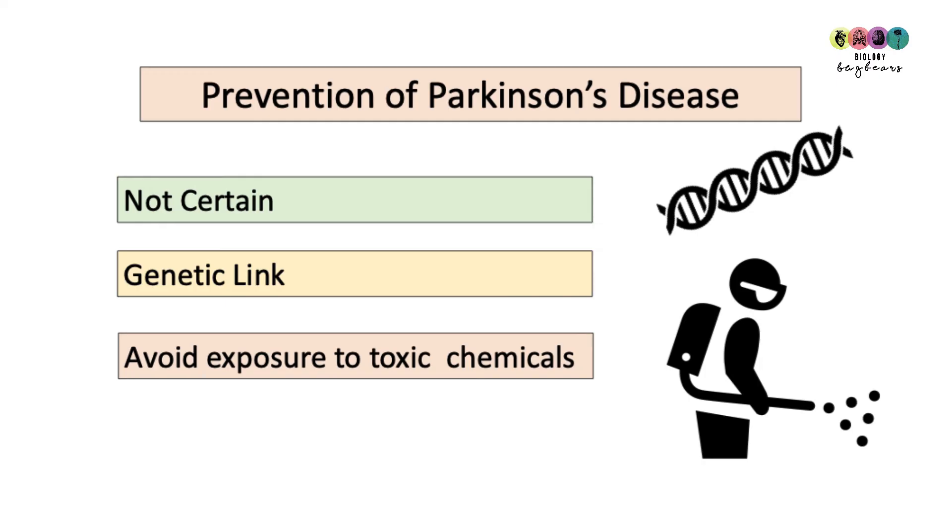So what caused Parkinson's and how would you prevent yourself from getting it? Well, firstly, they're not 100% certain on what causes it. There are some genetic links and there is some evidence to suggest that exposure to chemicals such as pesticides is linked with developing Parkinson's. So your best bet is to avoid exposure to these toxic chemicals and wear protective equipment.